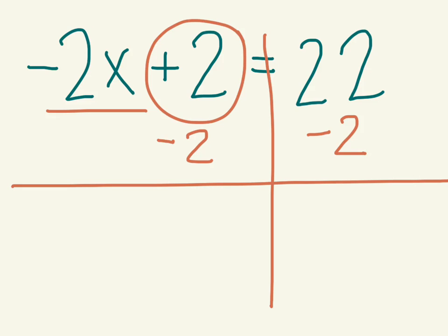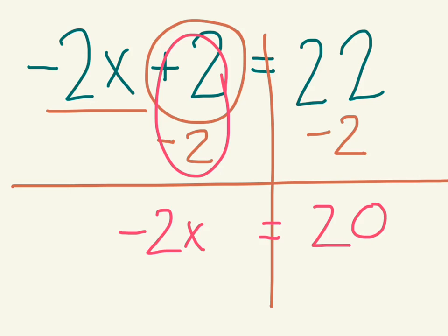Okay, positive 2 and negative 2 make a zero pair. They cancel out. I still have my negative 2x. And over here, 22 minus 2 equals 20.